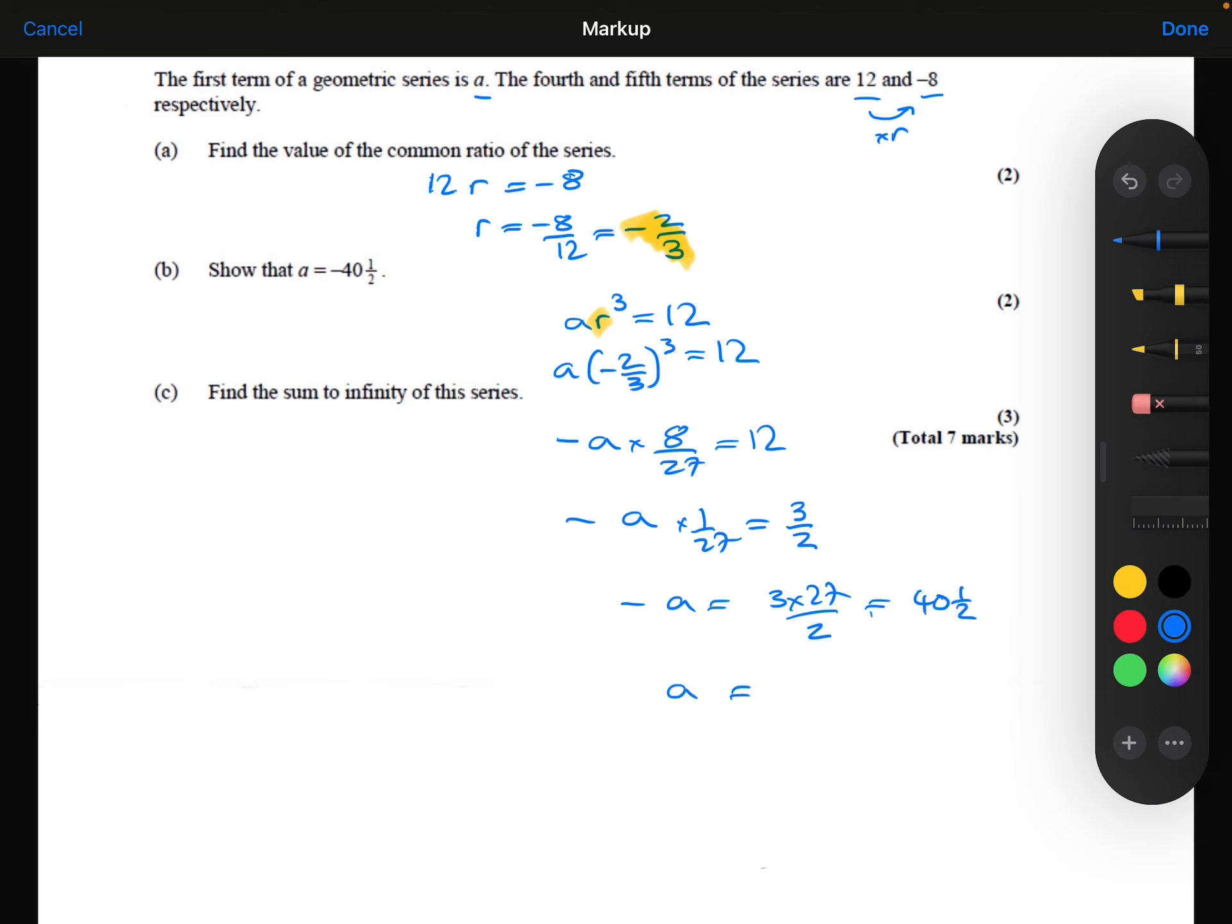And times by both sides by minus one. Obviously different ways you can rearrange it. I don't think I rearranged it in a particularly efficient way, but hopefully you got the point of how to show that A is minus 40.5.